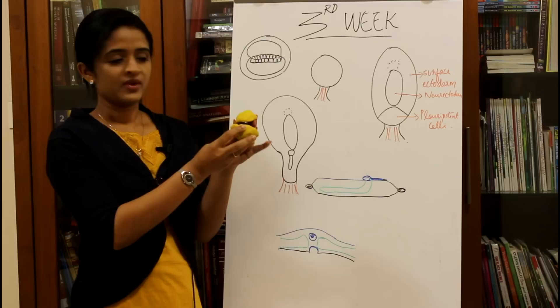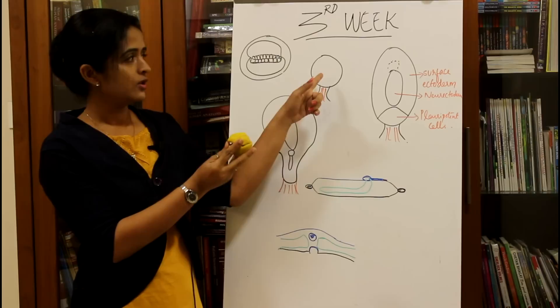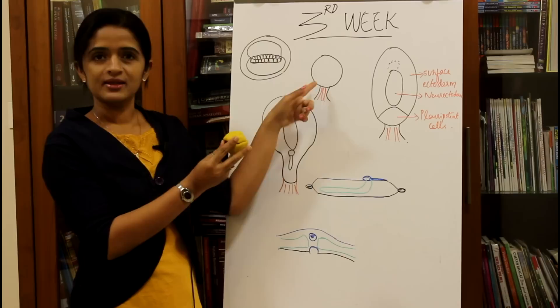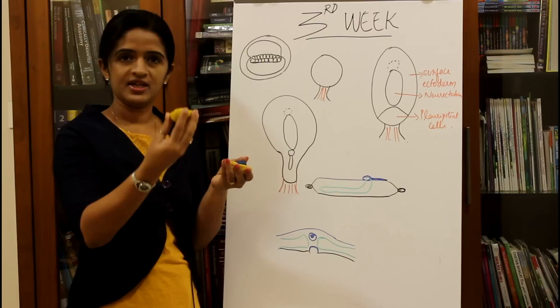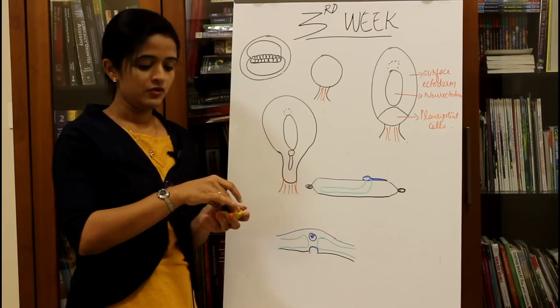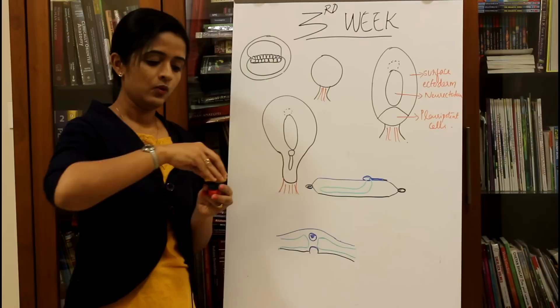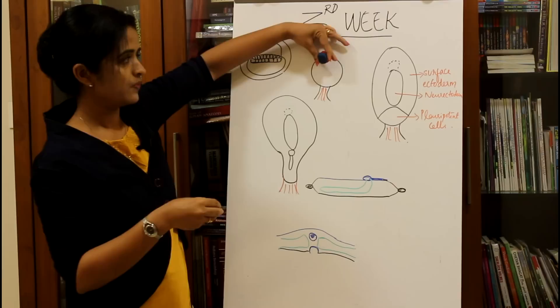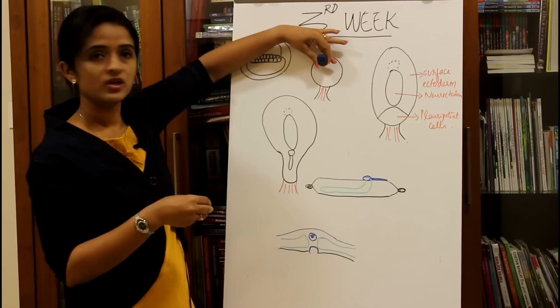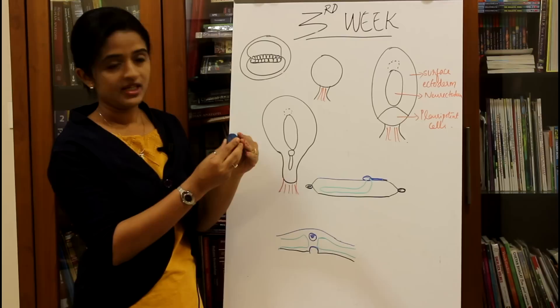This is how a developing embryo will look. To understand this diagram, we are removing the amniotic cavity and looking from above. We have removed the amniotic cavity and are locating structures from above. The embryonic disc at the beginning of the third week of development is somewhat circular, and later it will get elongated.